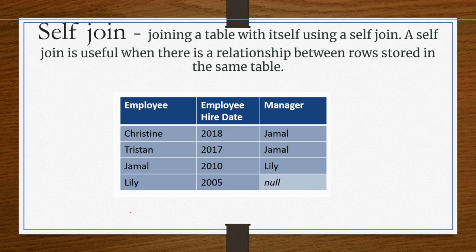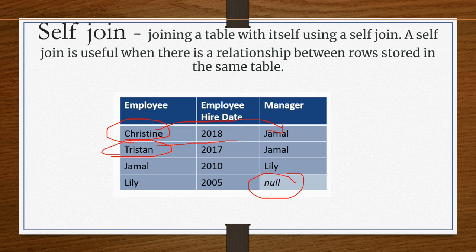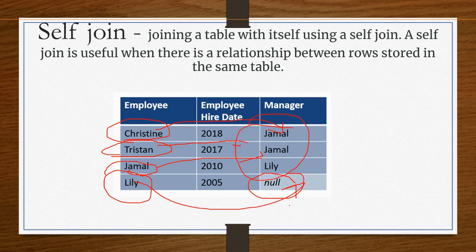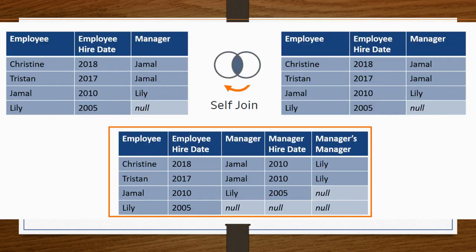Self-join means joining a table with itself. For example, in an employee table, Christine is an employee and Jamal is her manager. Jamal is also an employee where Lily is the manager. Lily is an employee but has no manager entry, so it shows null. In a self-join, the same table is assumed to be a second table and it finds the matches within itself.